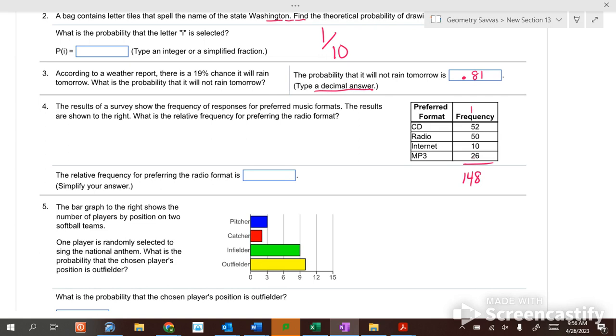So preferring radio is 50 over 148. Divide them by two is twenty-five over seventy-four. And it doesn't simplify anymore. Twenty-five over seventy-four.